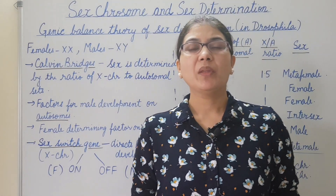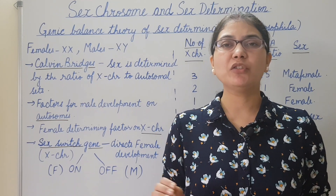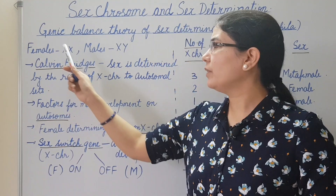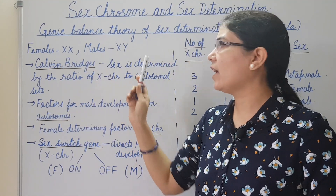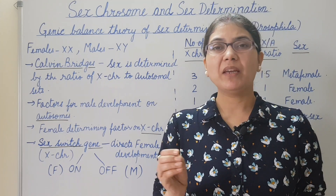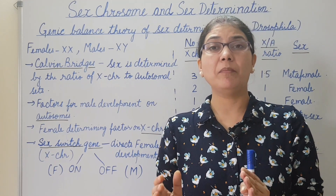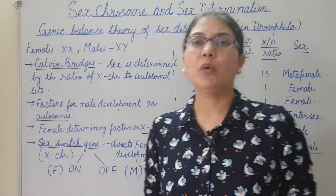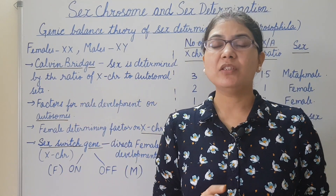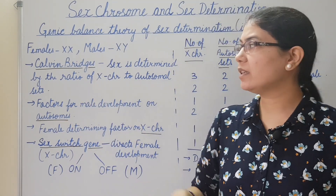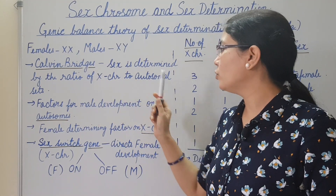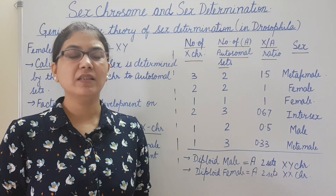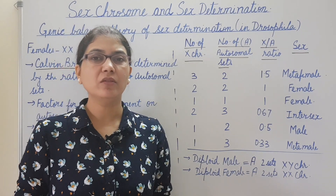Now let us see the genic balance theory of sex determination in Drosophila, the fruit fly. In Drosophila, females have XX chromosomes and males have XY chromosomes, but the mechanism of sex determination in Drosophila is different from mammals. In 1921, Calvin Bridges suggested that sex in Drosophila is determined by the ratio of X chromosomes to autosomal sets.